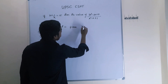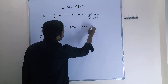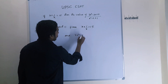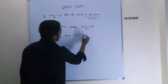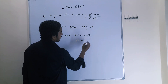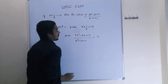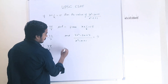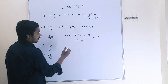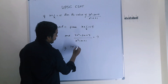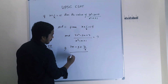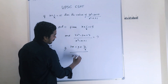Given: x + 1/x = 15, and we have to find the value of (7x² - 9x + 7) / (x² - x + 1). Dividing numerator and denominator both by x, that gives us (7x - 9 + 7/x) / (x - 1 + 1/x).